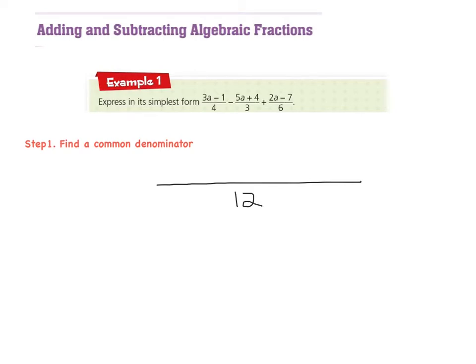Okay, so now I'm going to figure out how many times 4 goes into 12, and 4 goes into 12 three times. So I will have 3 bracket, whatever else is on top, so it's this bit here, so it's 3 bracket, 3a minus 1. Close the bracket. And then I must remember I have a minus here, so I'm going to place a minus here. And then I ask my question, well, how many times does 3 go into 12, and it goes 4 times. So it'll be 4 times whatever else is on top, 5a plus 4.